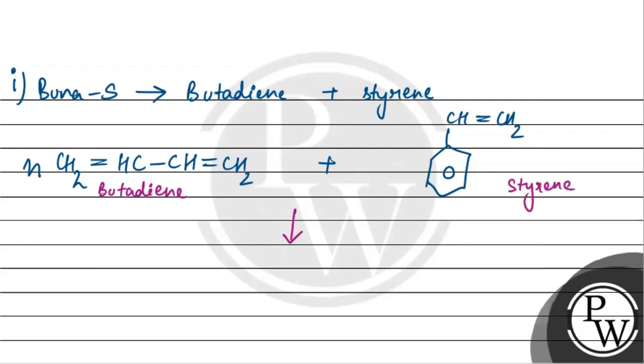This is a polymer which we call Buna-S: CH2-CH=CH-CH2-CH with a ring structure, and then CH2. This is a repeating unit of Buna-S. So, we got the answer. Buna-S is the polymer of monomers butadiene and styrene, and these are the structures.